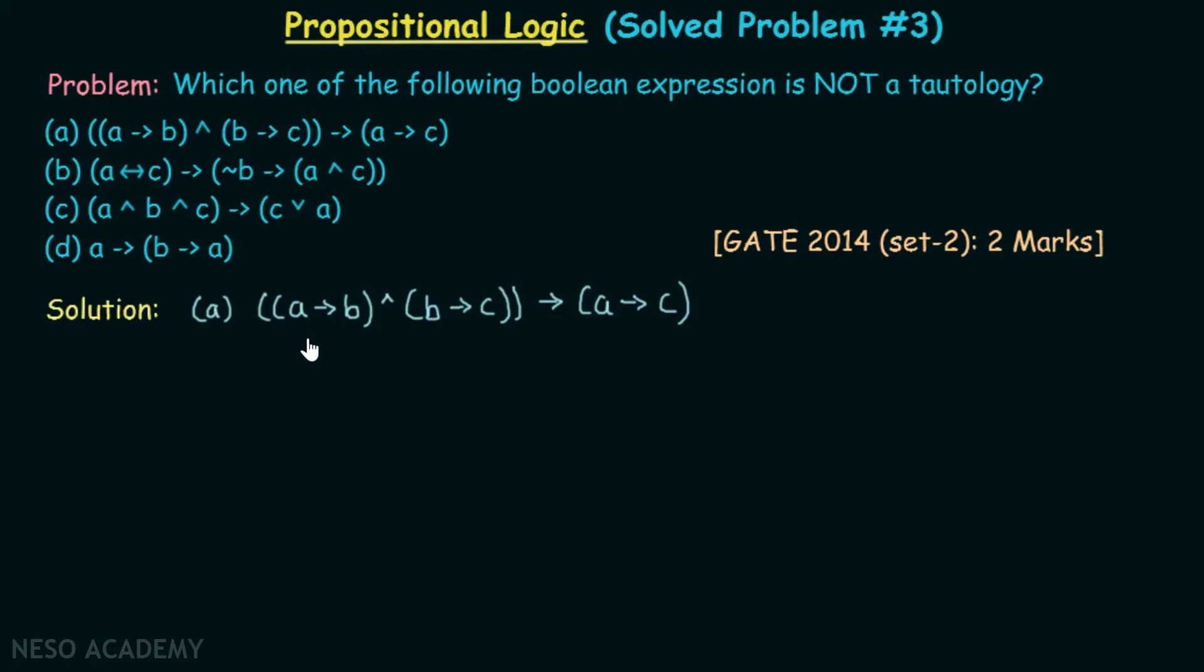Simple. We will take at least one truth value combination of A, B, and C, and we will try to prove that for that particular combination, this expression is false. Then automatically, it is not a tautology.